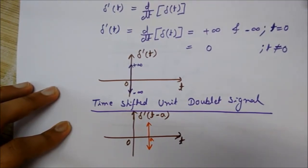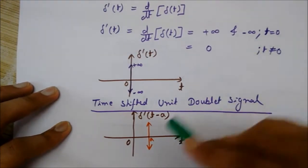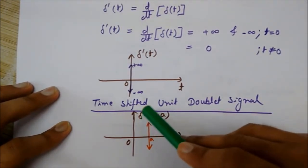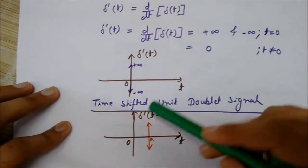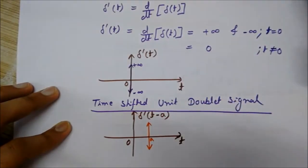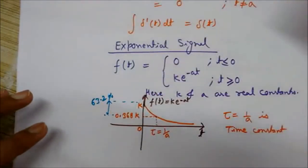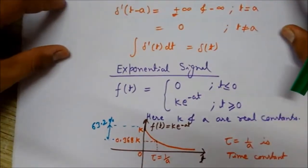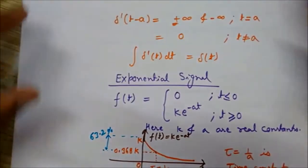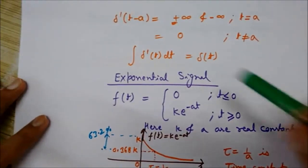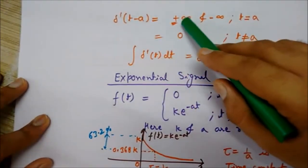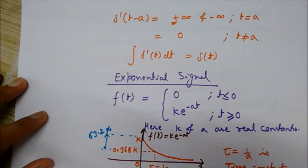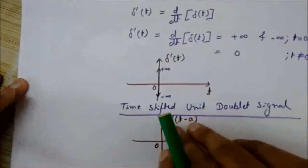It is denoted by delta dash, which stands for the unit doublet. Delta dash (t-a) is shifted by a. For this shifted signal, delta dash (t-a) equals plus infinity and minus infinity at t equals a.